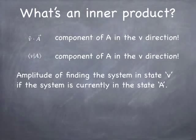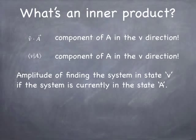Another way to look at that in quantum mechanics: if we have a state A, a quantum state, and some sort of a basis state v — a basis state is kind of like a unit vector, like the i-hat, j-hat, k-hat basis in Cartesian coordinates — you'd say it's the amplitude of finding the system in the basis state v, given that the system is currently in the state A. So another way to interpret inner product is it's a measure of the amplitude of finding the system in the state v, given that the system is currently in the state A.